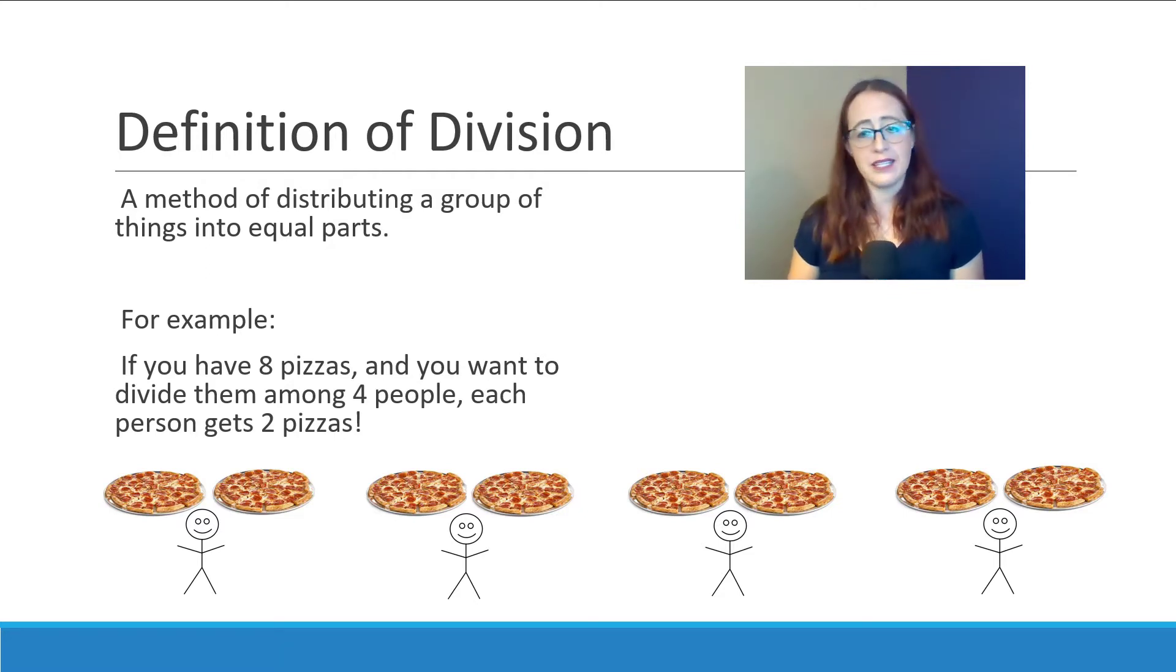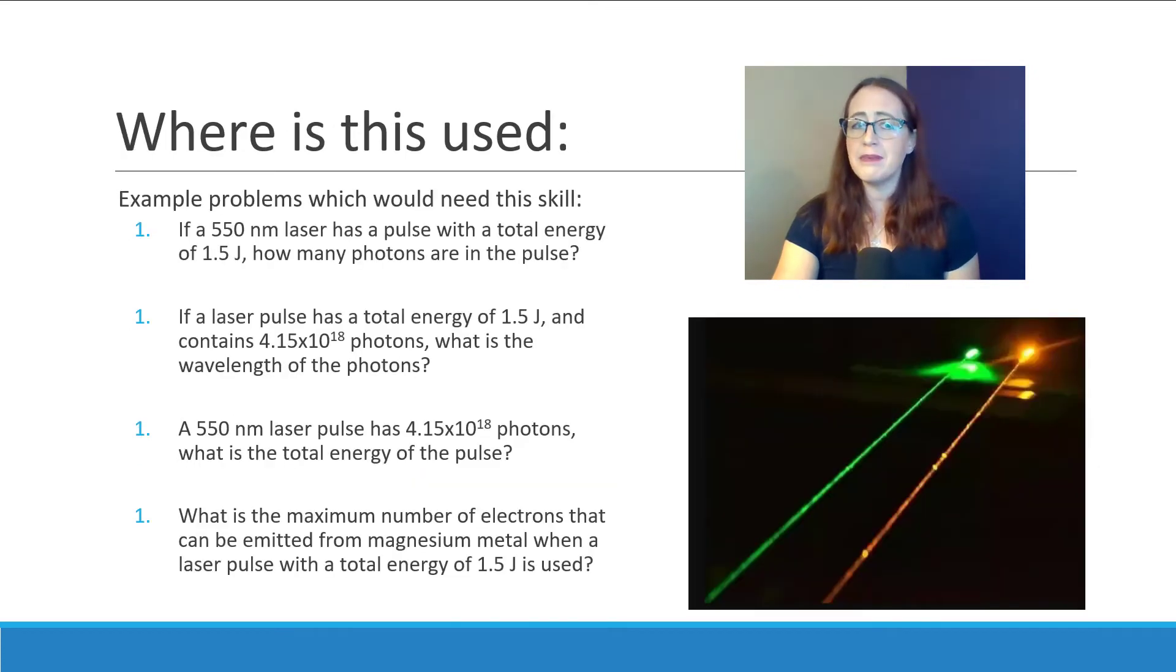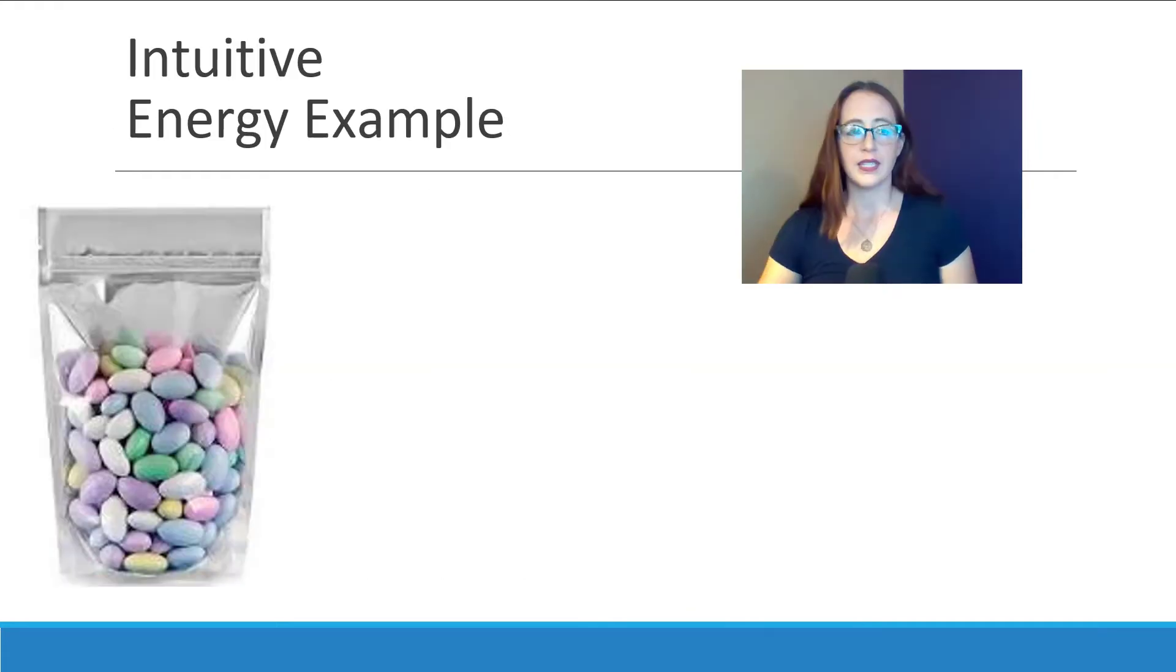But how can this be expanded to account for those energy problems on the last slide? After all, 8 pizzas being split among 4 people seems to be a bit more simple than the concepts on this slide. Let's look at another example involving food and one that generally we can kind of get without using an equation and use this to bridge into those harder chemistry examples.